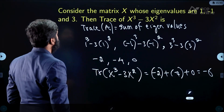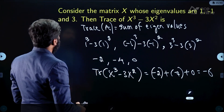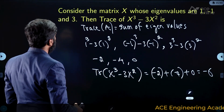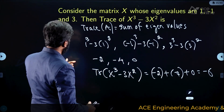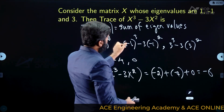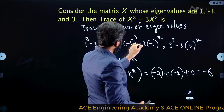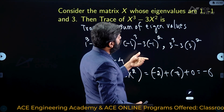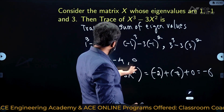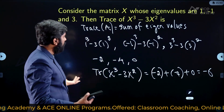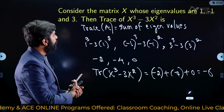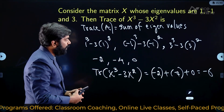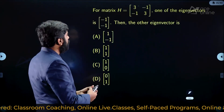Therefore the trace of X³ - 3X² is -6. Let me verify: 1 - 3 = -2 ✓, -1 - 3 = -4 ✓, 3³ - 3³ = 0 ✓. Everything is correct, so the trace of X³ - 3X² is -6.